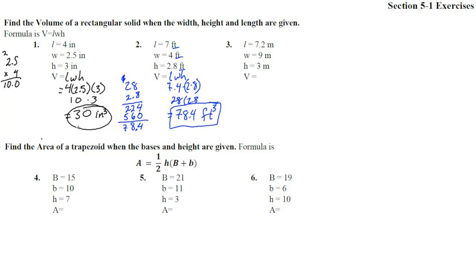Number three. LWH is 7.2 times 9 times 3. 9 times 3 is 27, so we get 7.2 times 27. 7 times 2 is 14, carry the 1. 7 times 7 is 49, plus 1 is 50. Put a 0 there for the second row. 2 times 2 is 4, 2 times 7 is 14. Adding those gives us 194.4 meters times meters times meters, which is meters to the third power, or cubic meters.